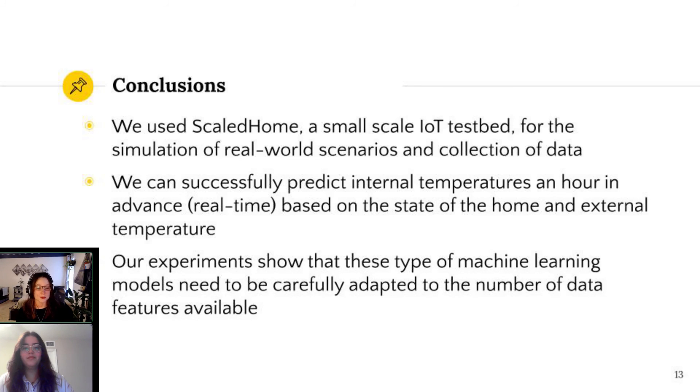In conclusion, we were able to use our small scale IoT testbed environment to simulate various daily activities around the home in various climatic conditions. Our collected data was able to successfully train machine learning algorithms to predict internal temperatures a full-scale hour in advance, with home actuator states and external temperature as variable inputs. Our experiments also show that the number of data features available can alter the accuracy of machine learning algorithms. These features need to be carefully adapted to maximize accuracy.